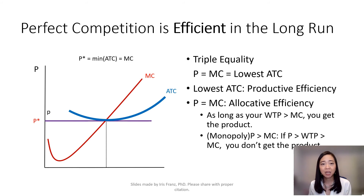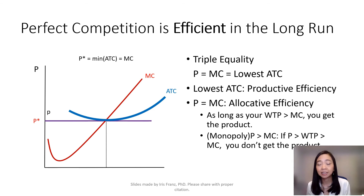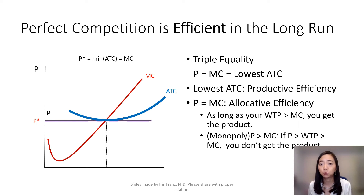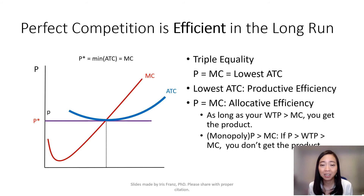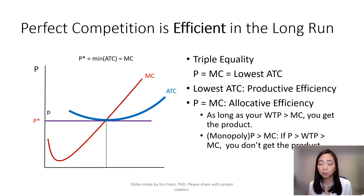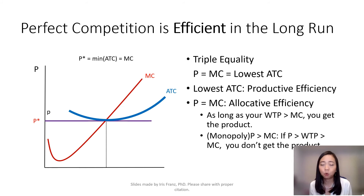Finally, perfect competition is efficient in the long run. You probably noticed that in the long run we have this triple equality for perfect competition, where price equals marginal cost equals the lowest point of average total cost. When we're producing at the lowest point of average total cost, that means we're using the least resources possible — we cannot produce a product by even cheaper means. Therefore, we have achieved productive efficiency.